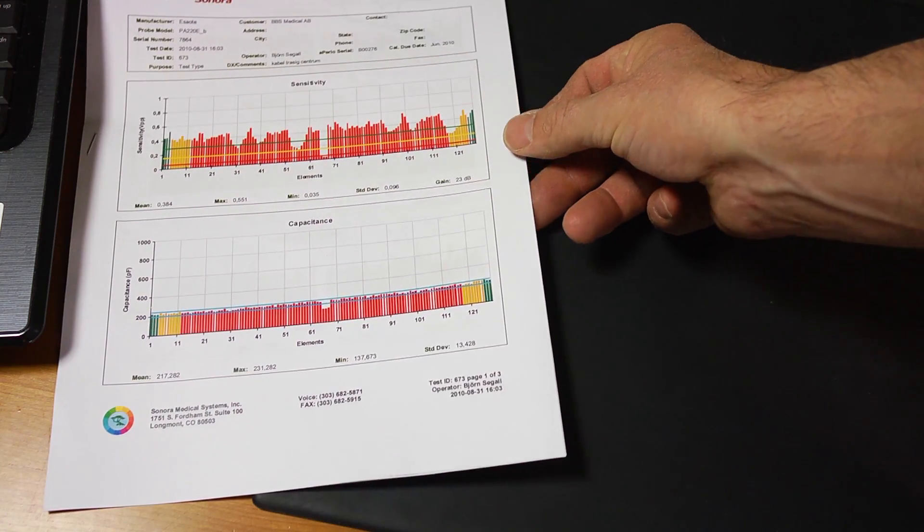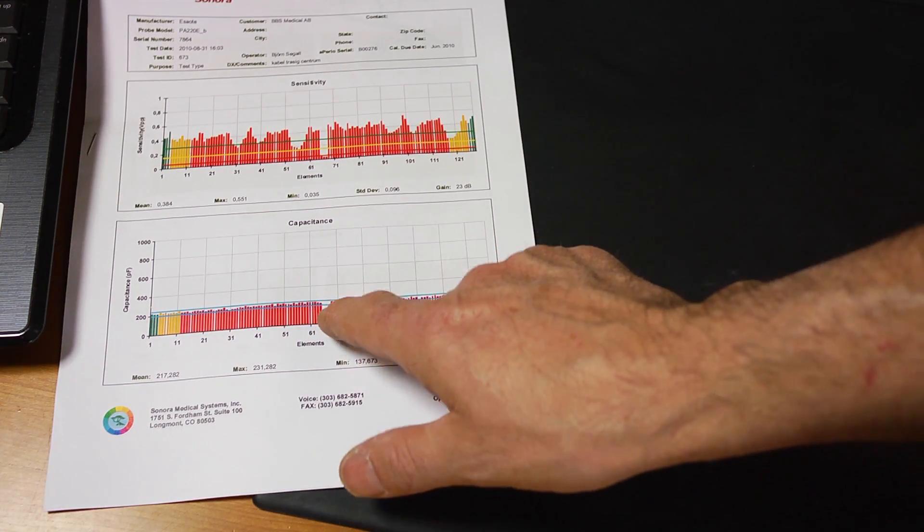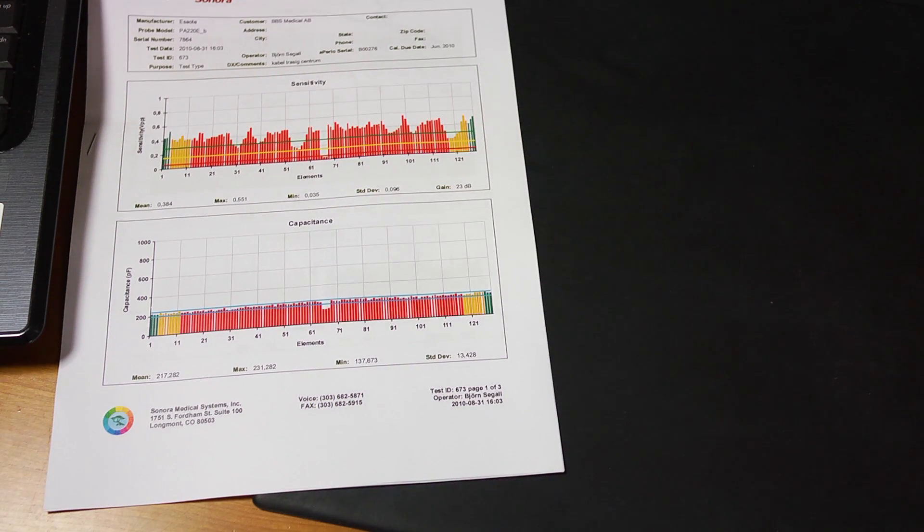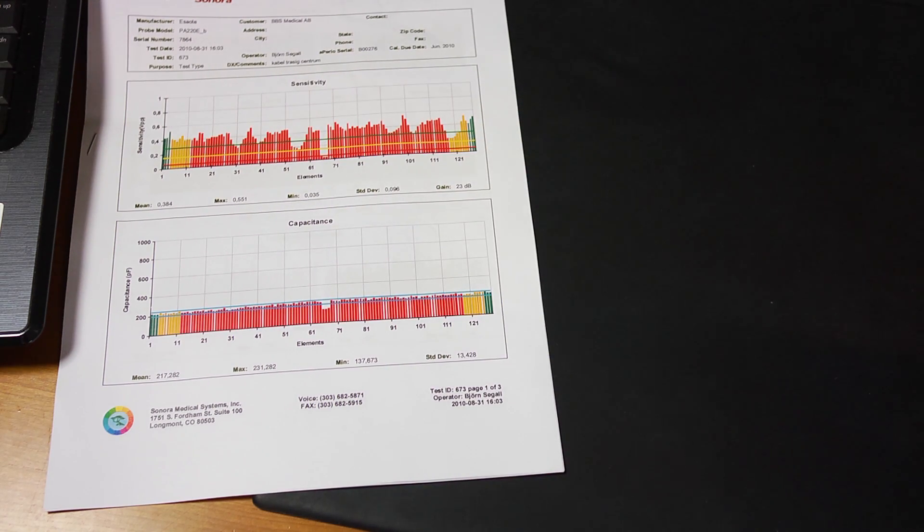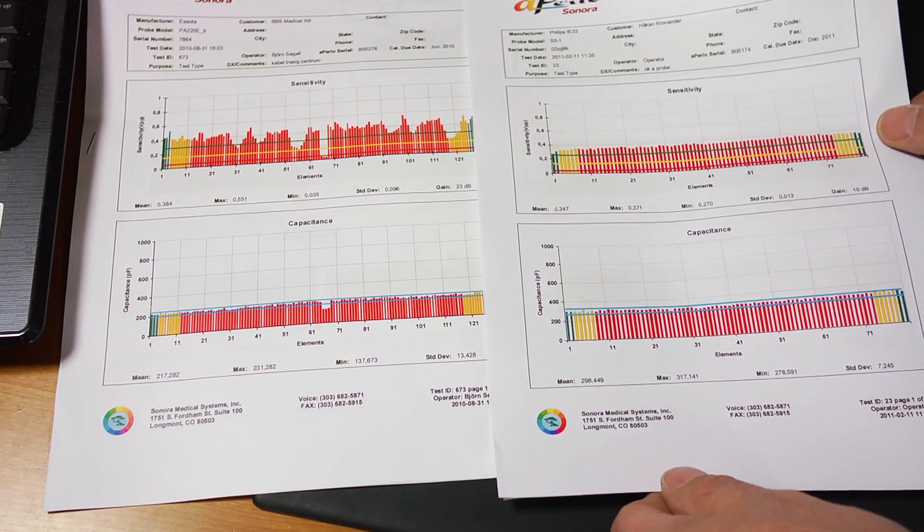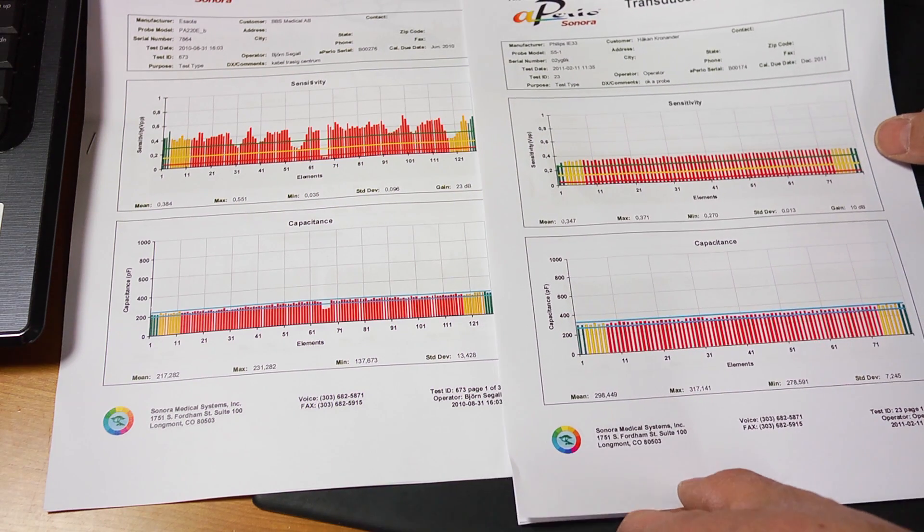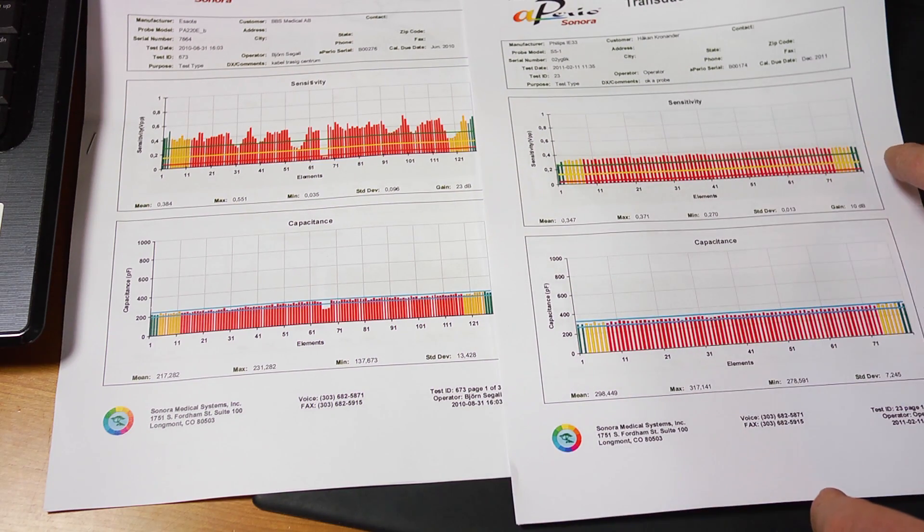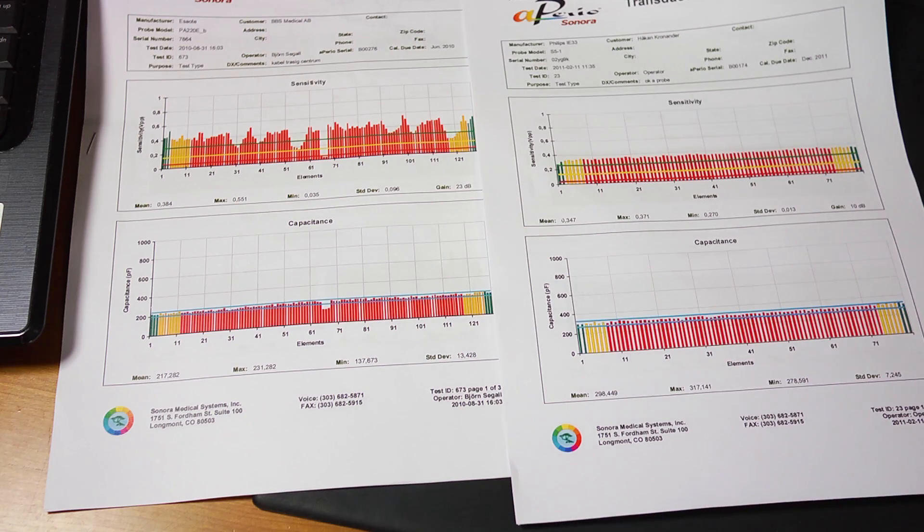It will produce a simple three page report, easily readable even for the doctors. And here is the report where we see we have a broken cable and we are missing the signal in the center of the probe here. And on this report we see a fully functional probe with all the crystals working and all the cables are okay.